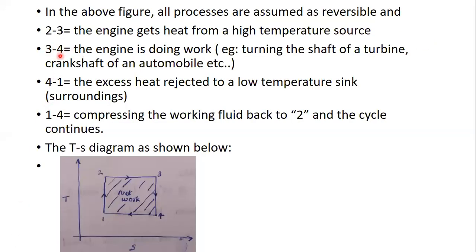To summarize: process 3-4 is where the engine does work, for example turning a turbine shaft or a crankshaft. Process 4-1 is where the excess heat is rejected to a low temperature sink — our surroundings. Process 1-2 is compressing the working fluid back to state 2, and the cycle continues.